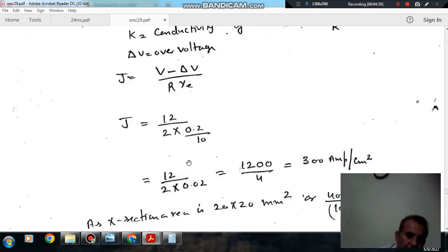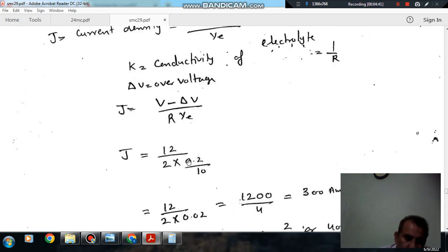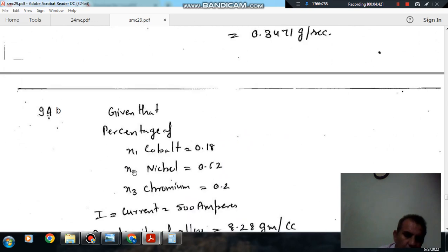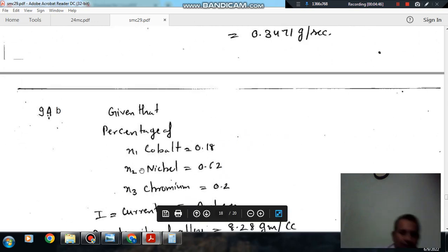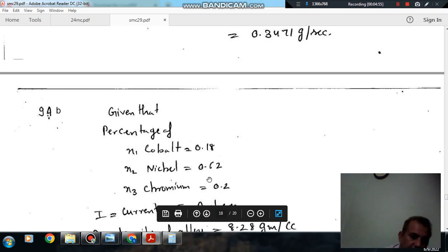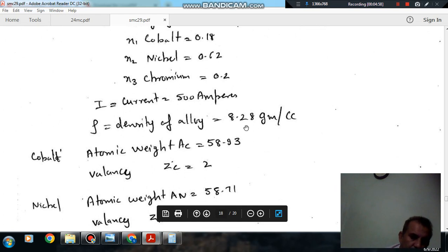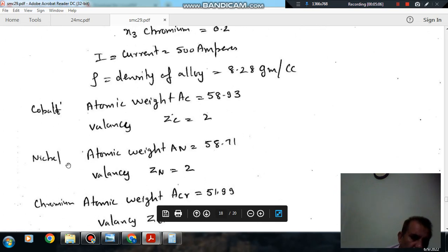So we have to find out the material removal rate. Here the mass fraction of cobalt is given as 0.18, fraction for nickel is given as 0.62, and fraction for chromium is given as 0.2. Current is given as 500 ampere, density of alloy is given as 8.28. Atomic weight of these materials cobalt, nickel, chromium and their valencies are also given.